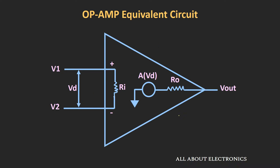Let us see the equivalent circuit of the op-amp. Ri is the input impedance and Ro represents the output impedance. The output voltage is the open loop gain multiplied by the difference between the input signals V1 and V2. For the ideal op-amp, the input impedance Ri should be equal to infinity, so that whatever input is applied between the input terminals directly reaches the op-amp. Similarly, the output impedance should be equal to zero, so that the output voltage directly appears across the output load.